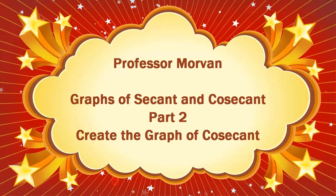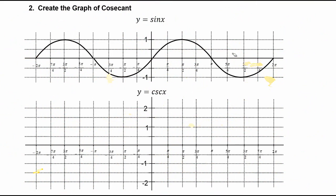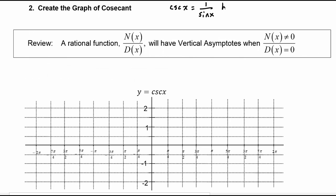In part two of our lesson on the graphs of secant and cosecant, we will create the graph of cosecant. From our reciprocal identities, we know that cosecant of x is equal to one over the sine of x, which means it's a rational function and that means it has vertical asymptotes when its denominator — which is sine of x — is equal to zero and its numerator, which is one, does not equal zero. Of course one can never equal zero, so any place that sine of x has a root, cosecant of x will have a vertical asymptote.